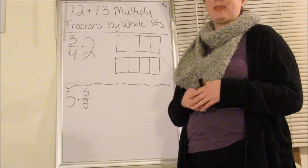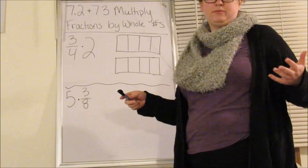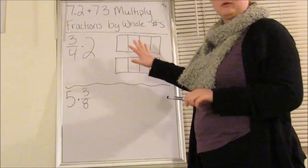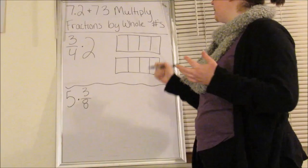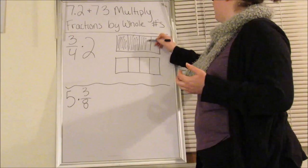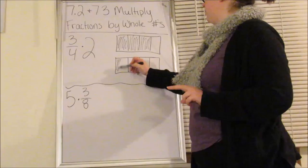We're going to start by looking at a problem that we're going to model. So we're going to have three-fourths times two. That means that we have three-fourths two times, because we're doubling something when we multiply by two. I already have my rectangles and I have them split into fours.